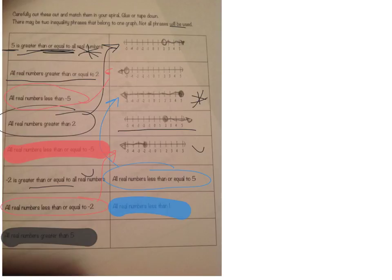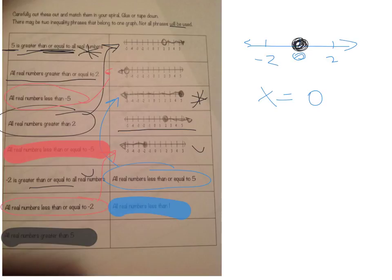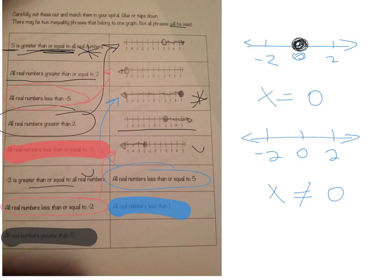This will be put on page 47 in your spiral. One last item we can put on page 47 would be a number line. If we had x equals zero, it simply would be a closed circle on zero — just one point. If we had x does not equal zero, then we are not going to include zero, but we are going to include everything on the opposite sides.